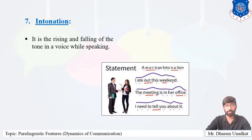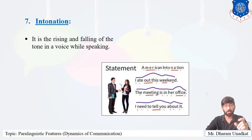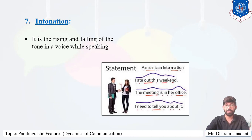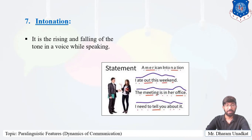The last element of Paralinguistic Features is intonation — the rising and falling of tone in the voice while speaking. For example, 'This is my uncle's house' — the voice is raised on 'uncle's house' because that is the important part. So the rising and falling of tone is known as intonation. To recap, the seven types included in Paralinguistic Features are: quality, volume, rate or pace, pitch, pronunciation, pauses, and intonation.